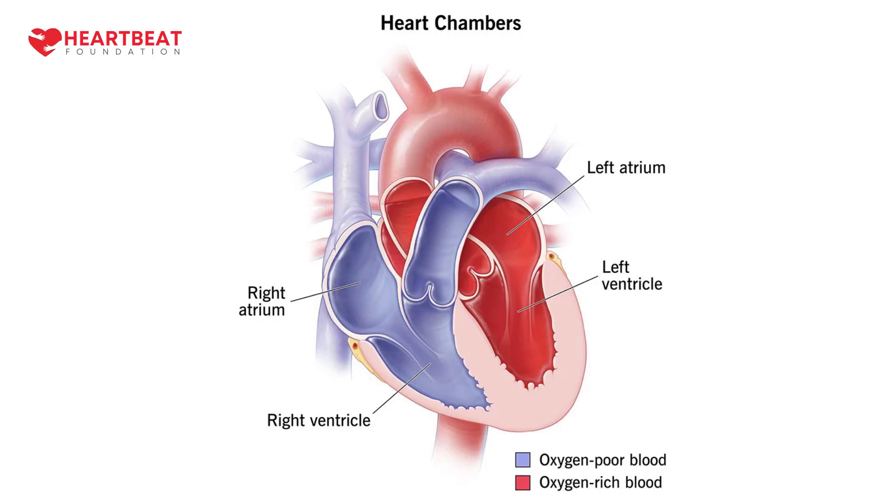It is also possible that the heart is structurally normal but the electricity is abnormal — for example, there is an extra connection between the upper and lower chambers responsible for paroxysmal supraventricular tachycardia, which is also curable. So arrhythmias can occur with either a normal or an abnormal heart.